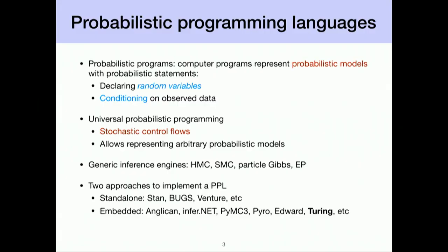I will start with a short recap of introduction to probabilistic programming and where Turing lives in the big picture. In probabilistic programming, we write probabilistic programs which are computer programs that represent probabilistic models using probabilistic statements. For Turing, we are interested in universal probabilistic programming, meaning we can support any stochastic control flows, allowing users to represent arbitrary probabilistic models.